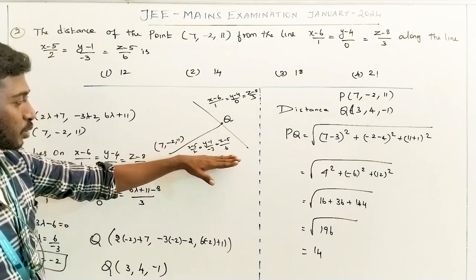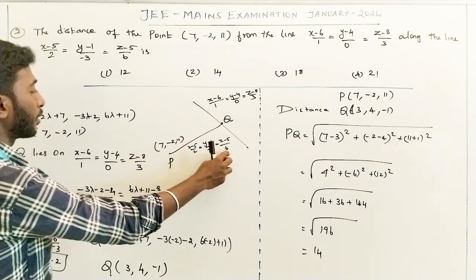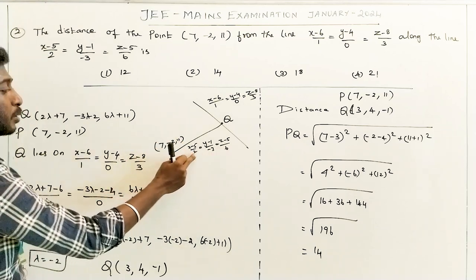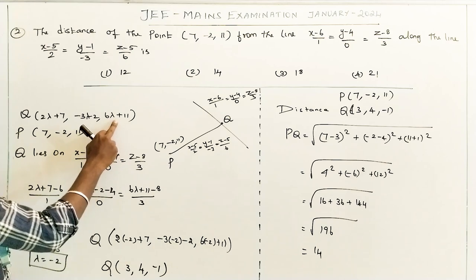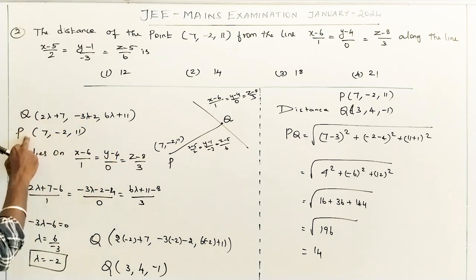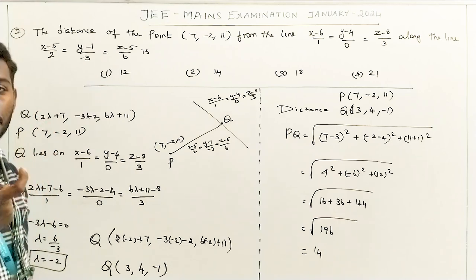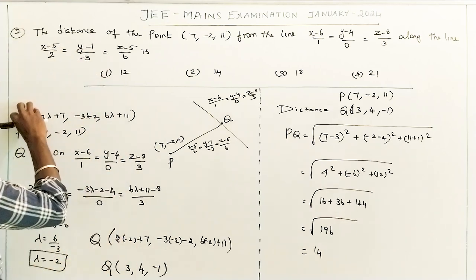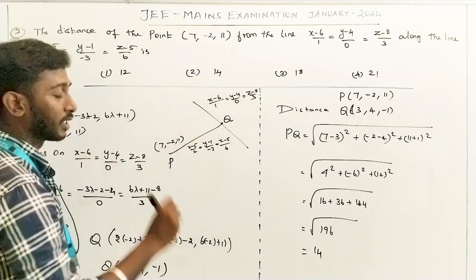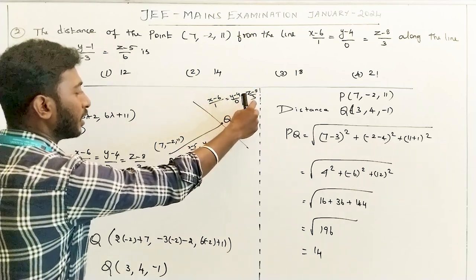This is the line. This is the direction ratio 2λ-3, 3λ-2, 6λ-11. The distance value of this point. So let's look at the point. This point is the line, so let's say x-6 by 1, y-4 by 0, z-8 by 3.